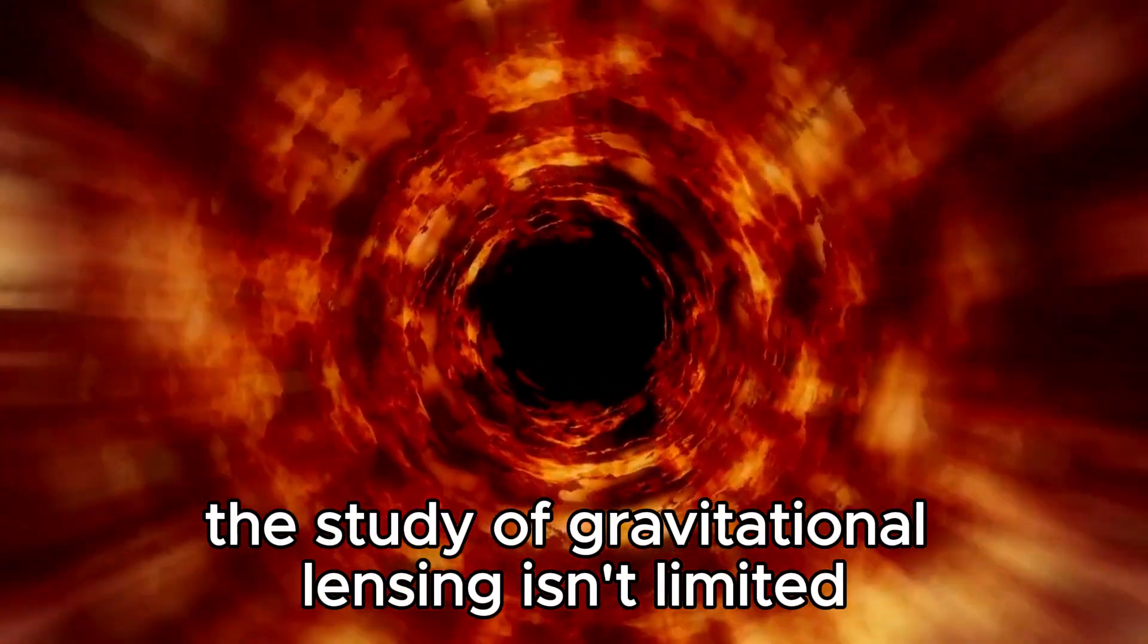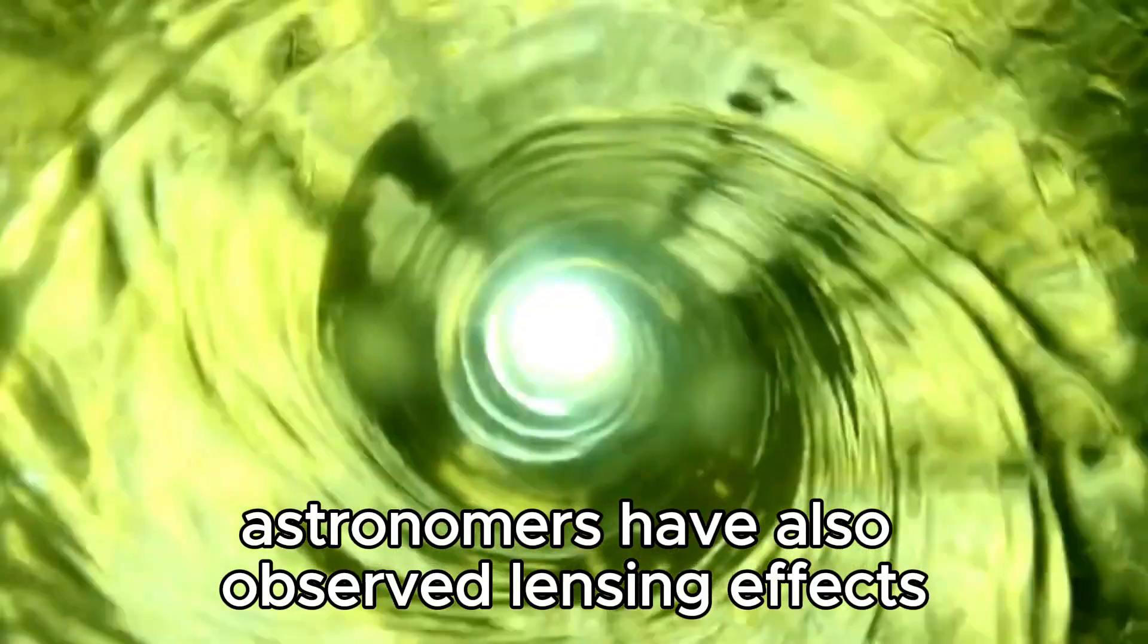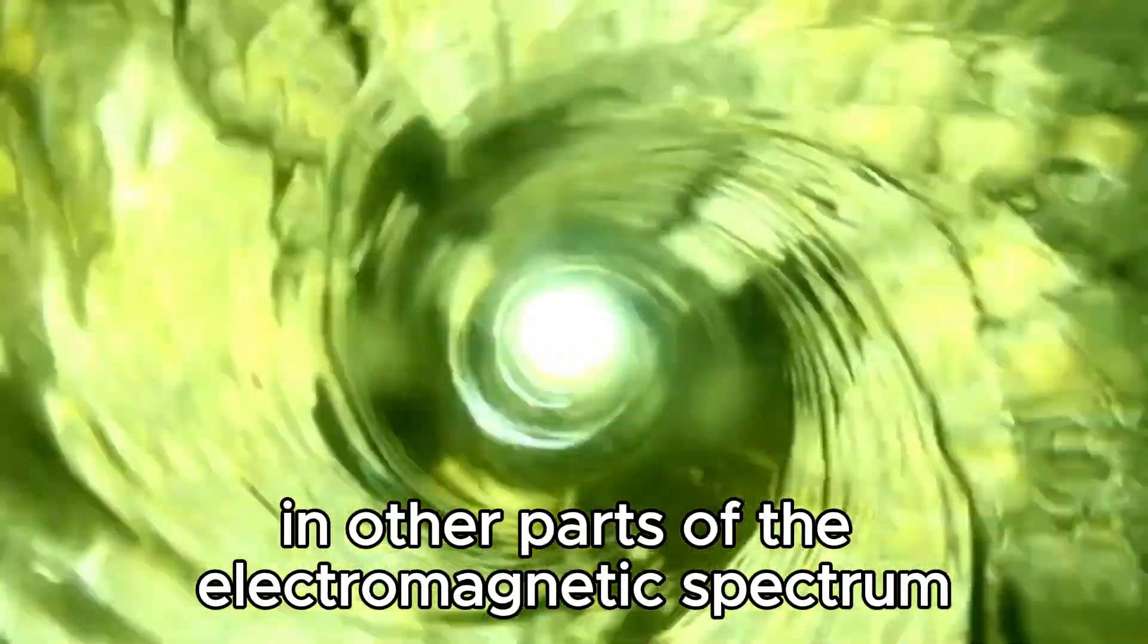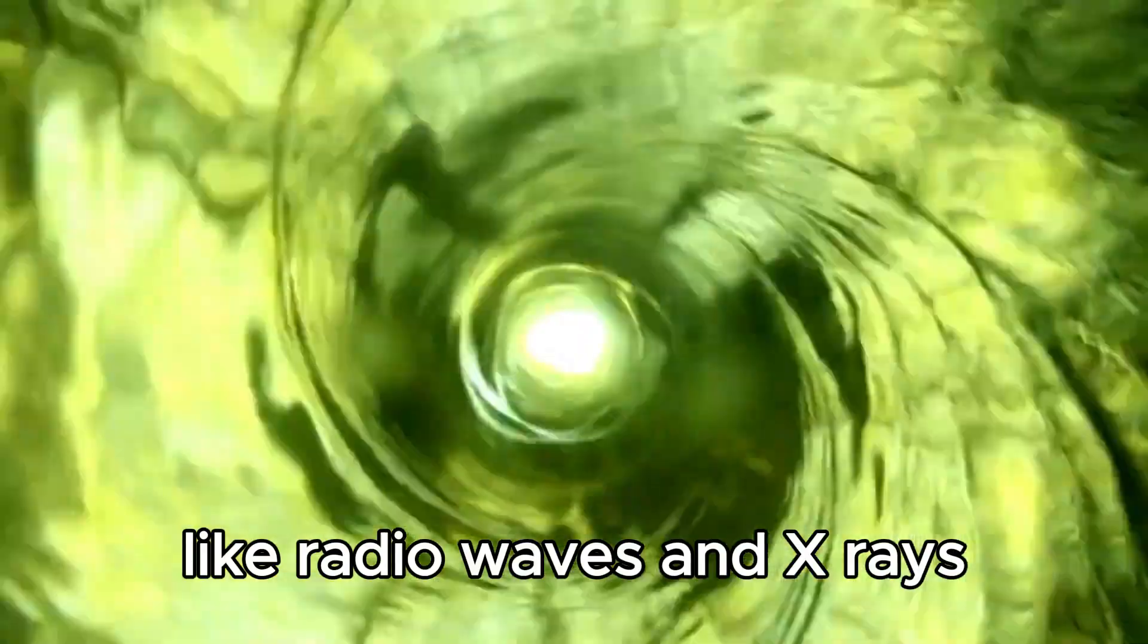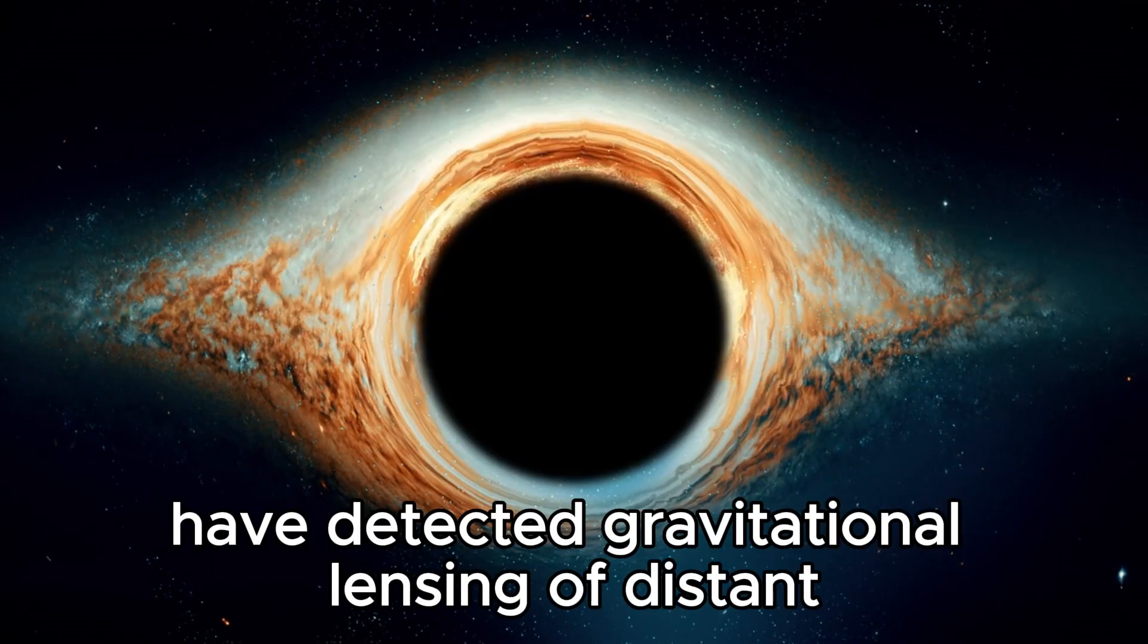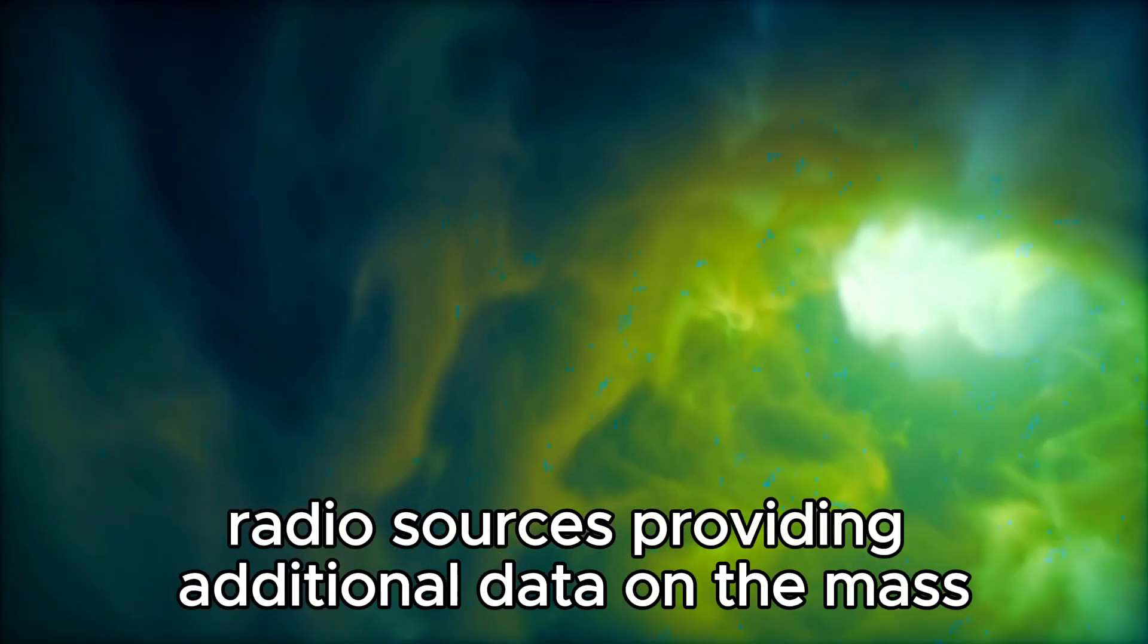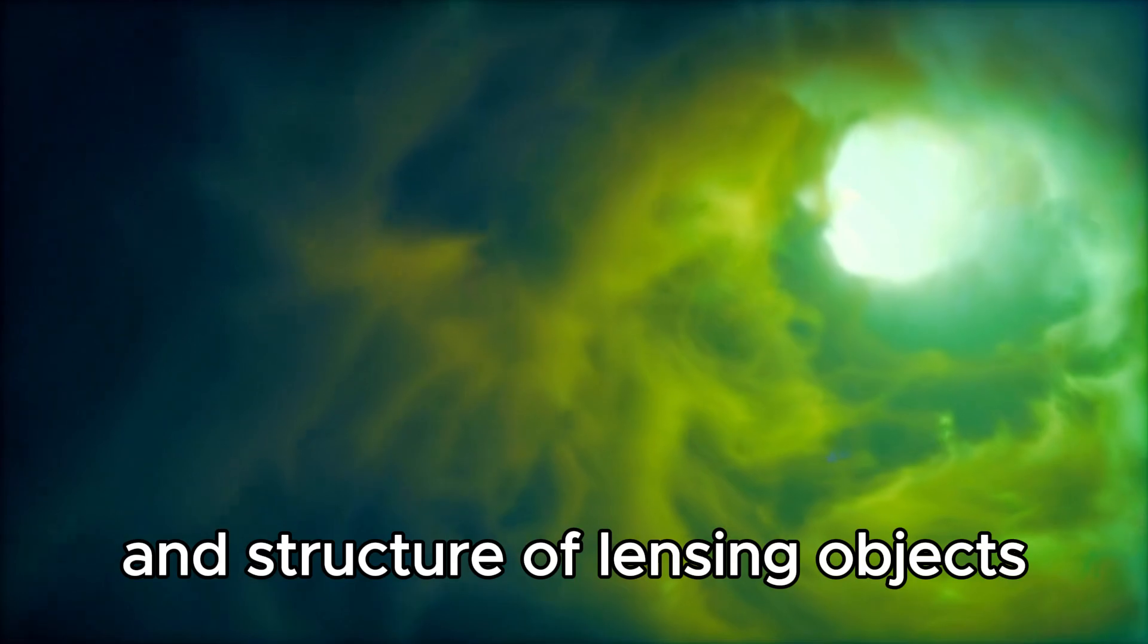The study of gravitational lensing isn't limited to visible light. Astronomers have also observed lensing effects in other parts of the electromagnetic spectrum, like radio waves and X-rays. For example, radio telescopes have detected gravitational lensing of distant radio sources, providing additional data on the mass and structure of lensing objects.